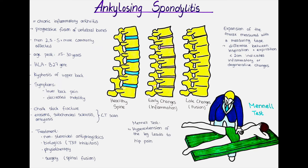In ankylosing spondylitis, there is repeated inflammation of these tissues, and with that scar tissue creation and the formation of abnormal bone tissue develops. To identify the chalk stick fractures, we can do a CT scan. Here, chronic changes such as erosions, subchondral sclerosis and ankylosis are also better visualized than with a plain X-ray.